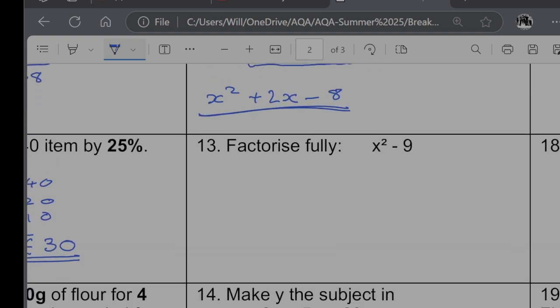Question 13. Factorise fully. So this is what we refer to as a difference of two squares, because x squared is a squared term and 9 is a squared number. So the difference of two squares means that it's going to go into two brackets. Both of which are going to start with an x, or the square root of the first term. And then the back number is going to be 1 is going to be plus 1 is going to be minus. And then it's the square root of both 3 and minus 3.